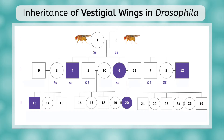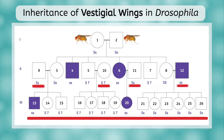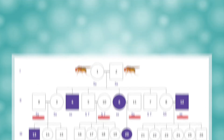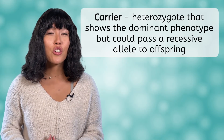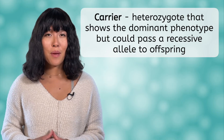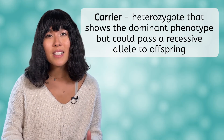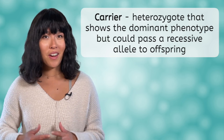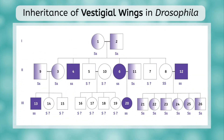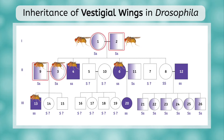Pause the video here and see how many of the remaining genotypes you can figure out. Here are the remaining genotypes — check your answers and fill in any you missed. Because we were dealing with a recessive trait, it is good to mark the carriers on the pedigree. Carriers are heterozygous, so they show the dominant phenotype, but they can end up having offspring with the recessive phenotype if they mate with another carrier. Note that in every case where parents with wild type wings had vestigial winged offspring, both parents were carriers.